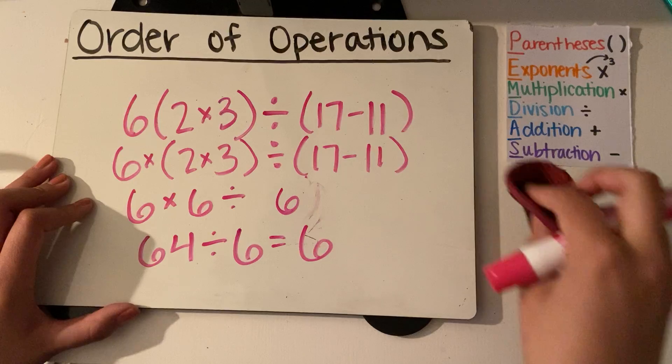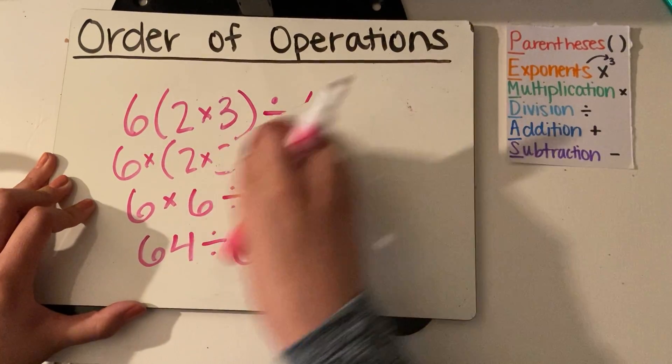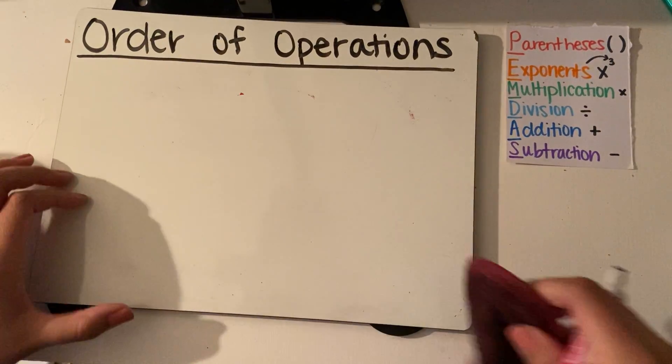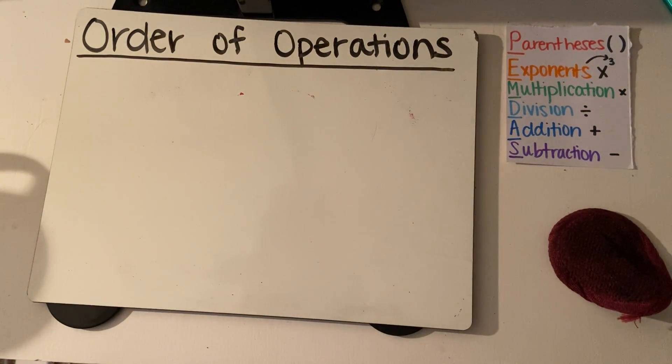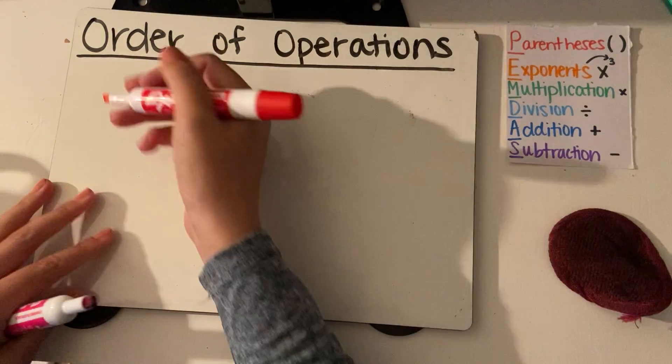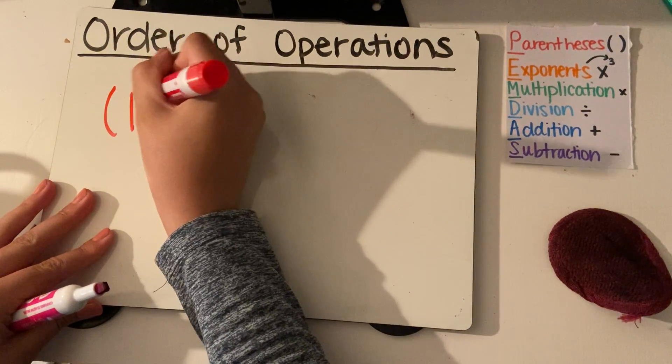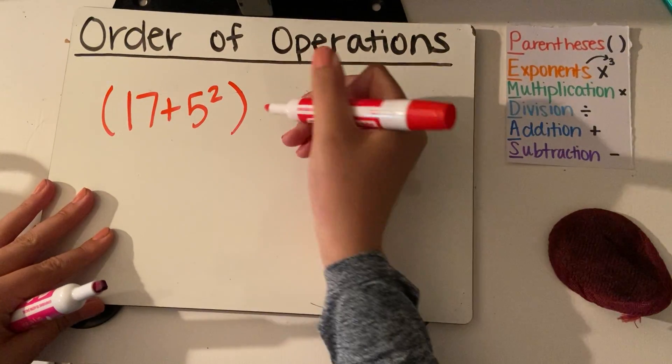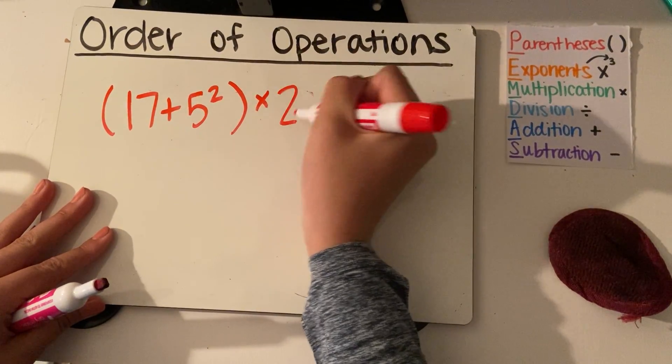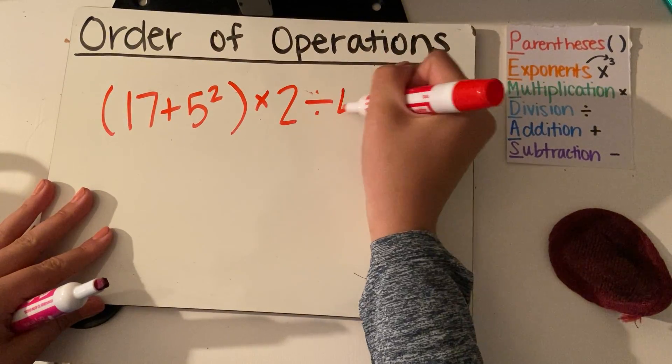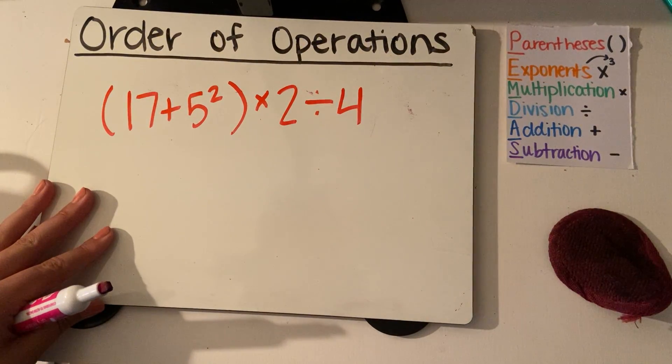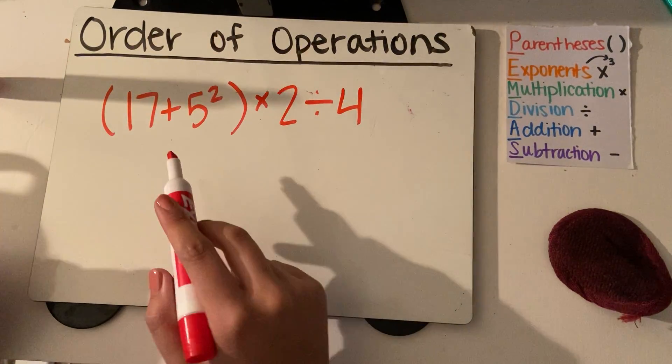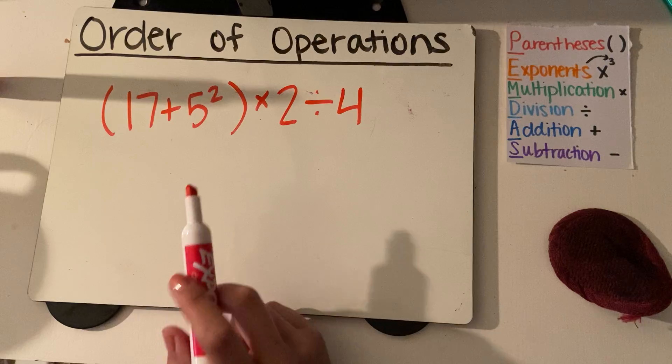Let's do one more problem together here. Let's do parentheses 17 plus 5 squared times 2 divided by 4. So I need to work within my parentheses first. And within my parentheses, I see that there's an exponent. So I have to solve that first.